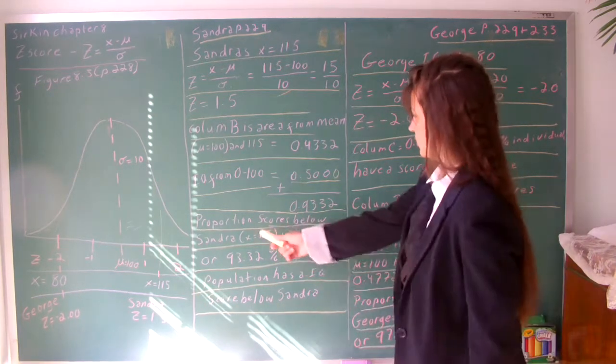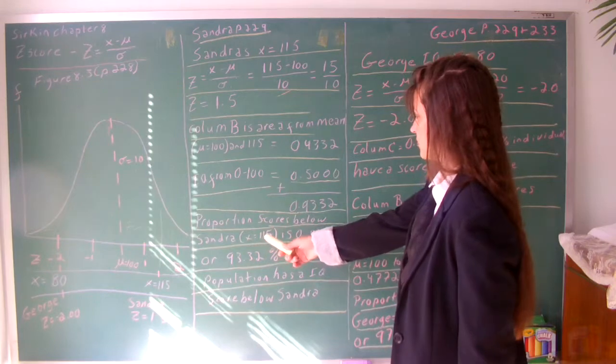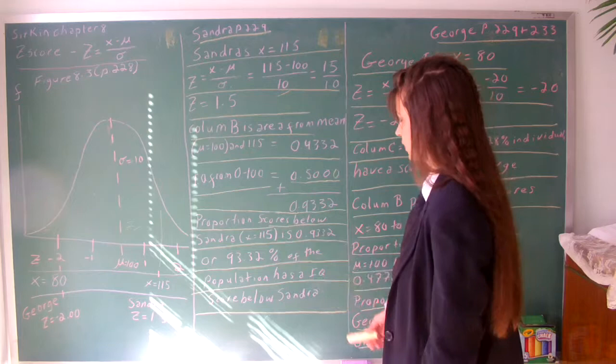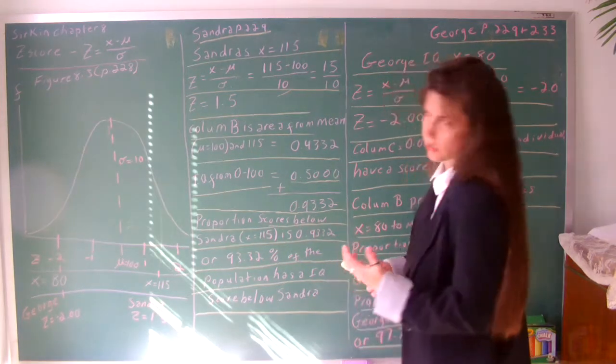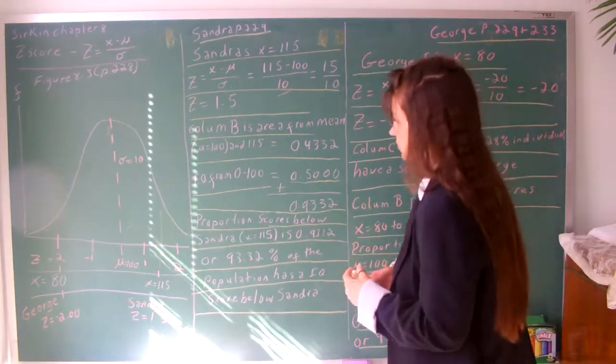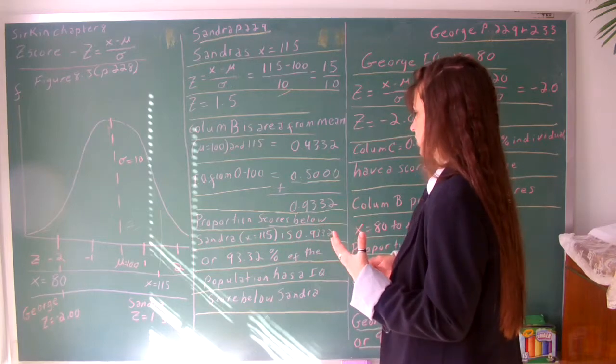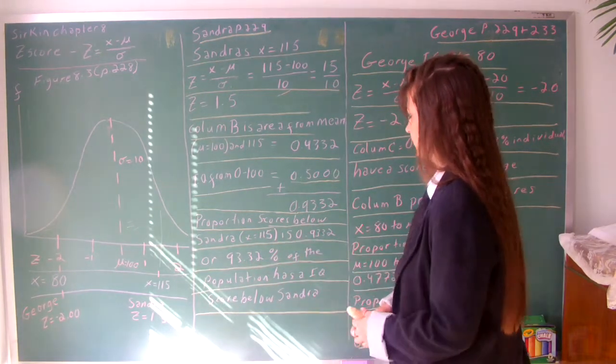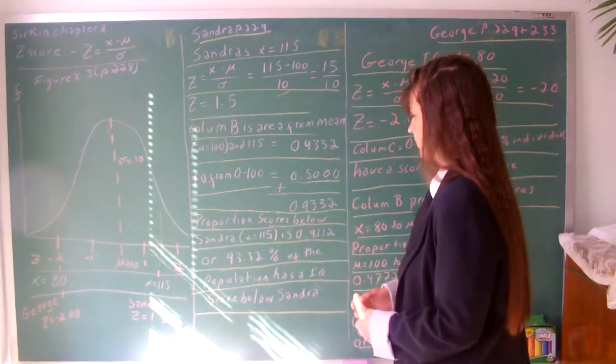That's the proportion of scores below Sandra's score of x equals 115 is 0.9332, or in other words, the percentage of individuals with a score lower than Sandra's would be 93.32% of the population has an IQ score below Sandra.